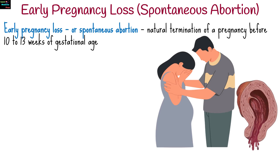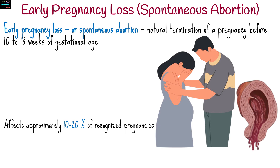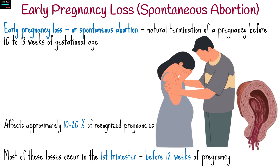Early pregnancy loss, or spontaneous abortion, refers to the natural termination of a pregnancy before 10 to 13 weeks of gestational age. It is a common occurrence, affecting approximately 10 to 20% of recognized pregnancies. Most of these losses occur in the first trimester, that is, before 12 weeks of pregnancy.